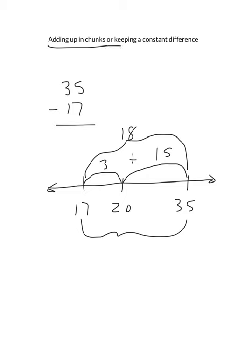Or we can do keeping a constant difference. You say, well, wait a second. What if I made 17 into a friendlier number? Made that into 20, made that into 38. What's 38 minus 20? It's also 18.